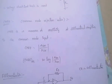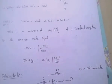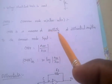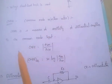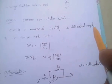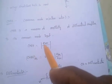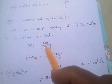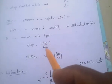Coming to the CMRR — Common Mode Rejection Ratio — very, very important. Common mode rejection ratio is a measure of sensitivity of differential amplifier to the common mode input. That is CMRR equals mod ADM by ACM. ADM is differential mode; ACM is common mode.